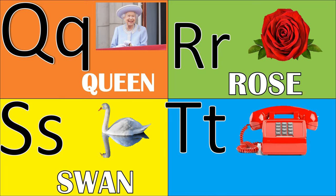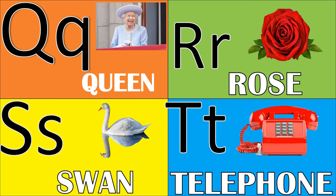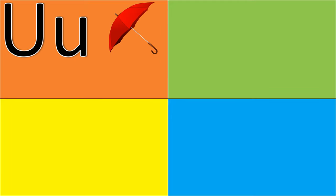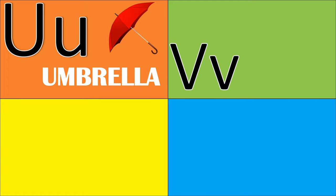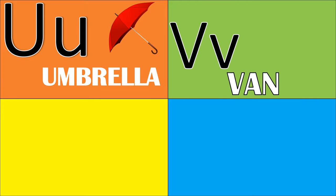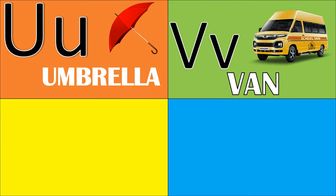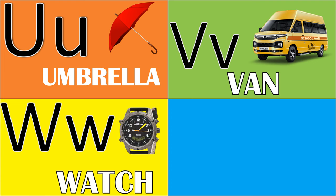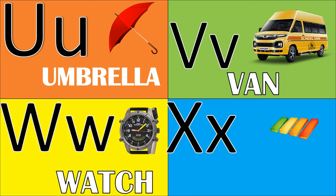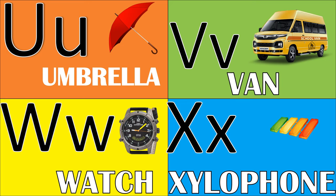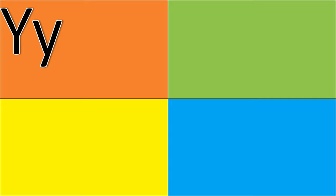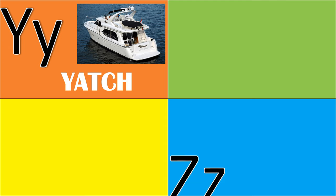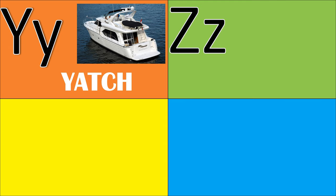T for telephone, U for umbrella, V for van, W for watch, X for xylophone, Y for yacht, Z for zebra.